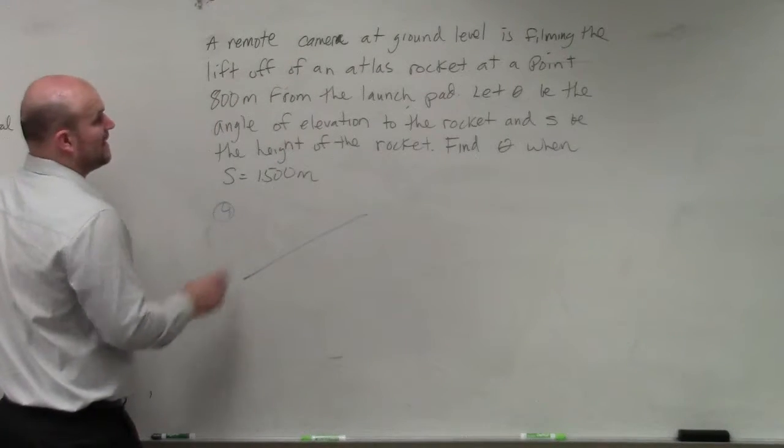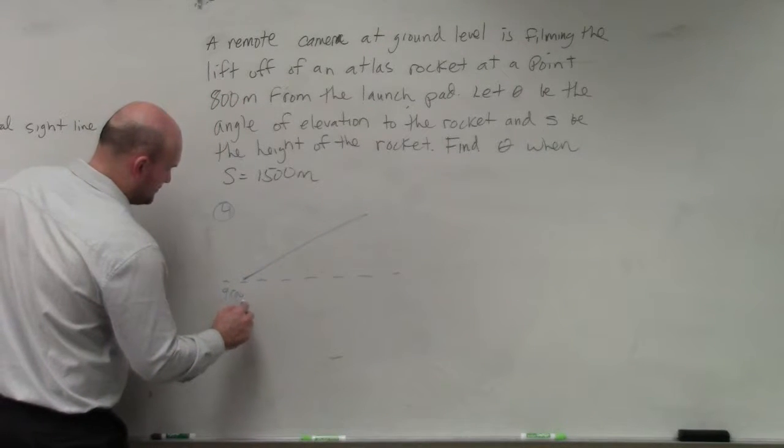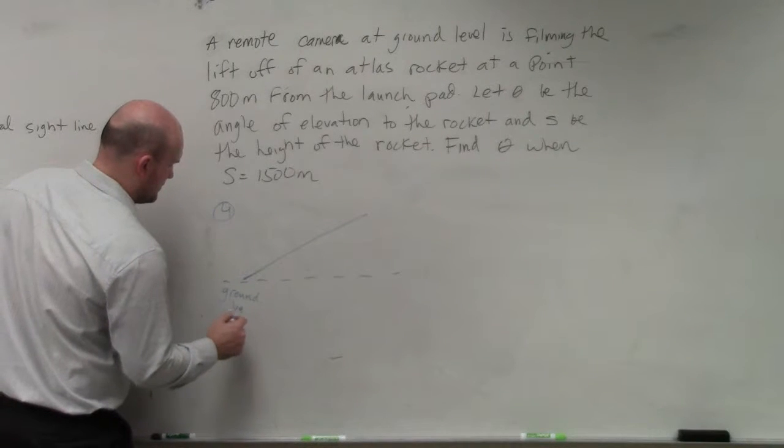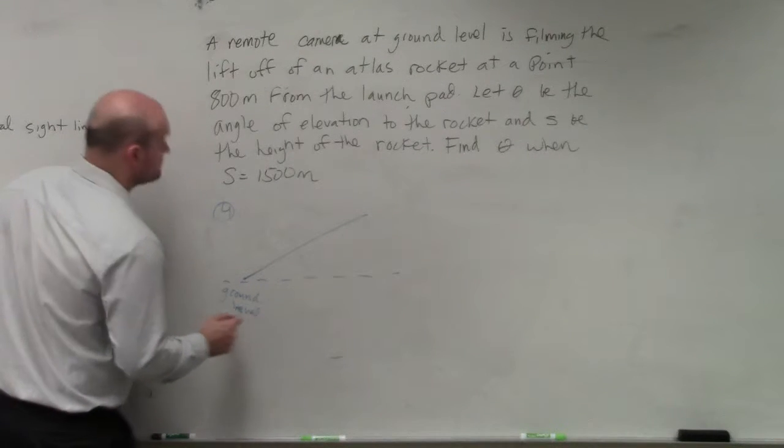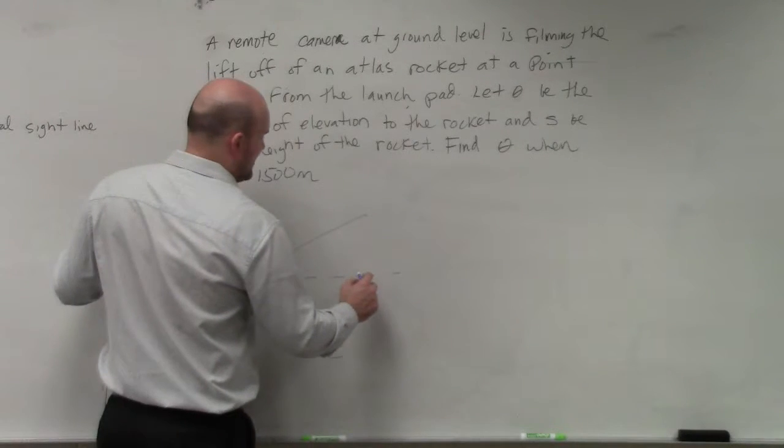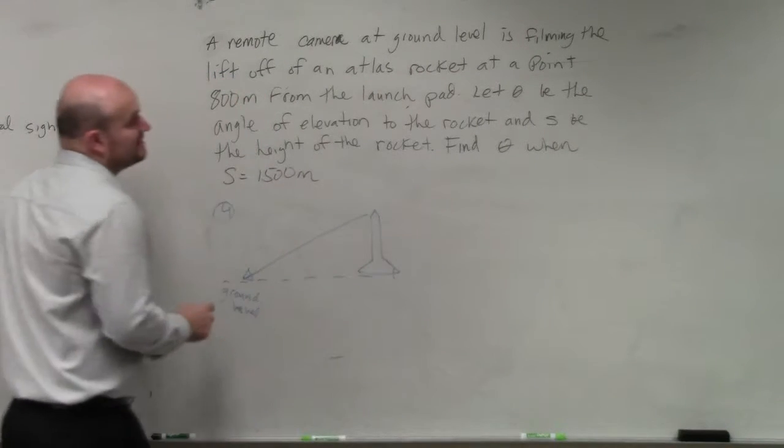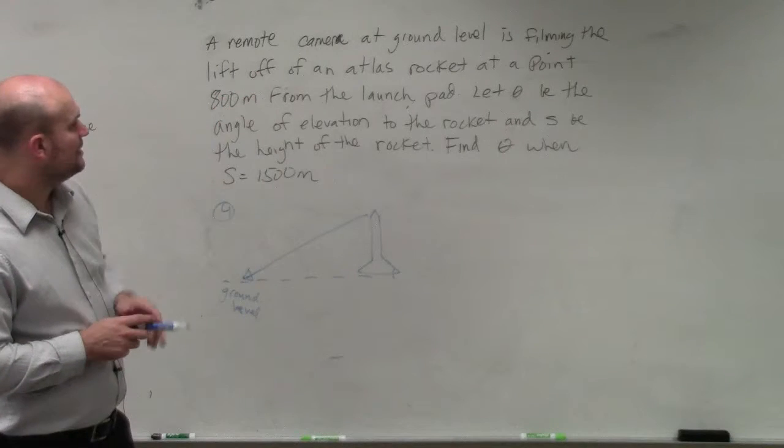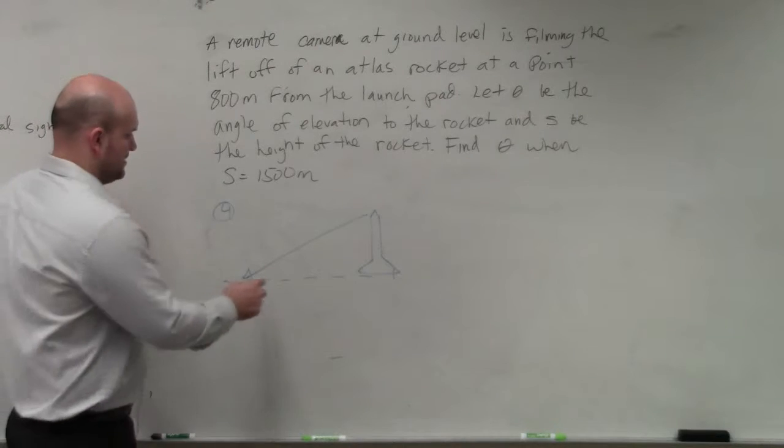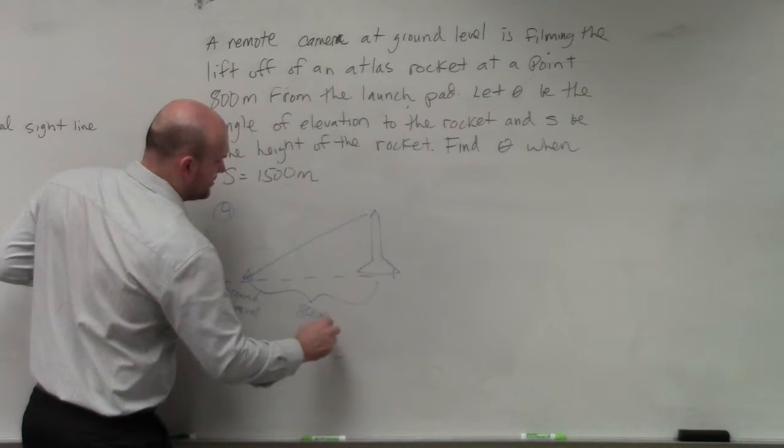So first of all, we know we have an angle of elevation. I'm going to say that's ground level. So we have a camera, right? There's a camera. It's looking up at a rocket. Now, the distance to the Atlas rocket is 800 meters from the launch pad. So the distance here is 800 meters.